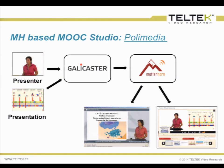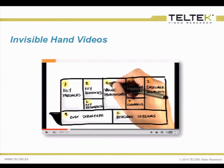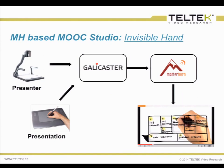The other format is the invisible hand. These invisible hand videos use an overhead camera instead of shooting the professor — you shoot the hand writing on a Wacom or similar device. Then, with the proper workflow, you can merge the two videos, reduce the opacity of one and merge with the other. This can be done almost without human intervention.